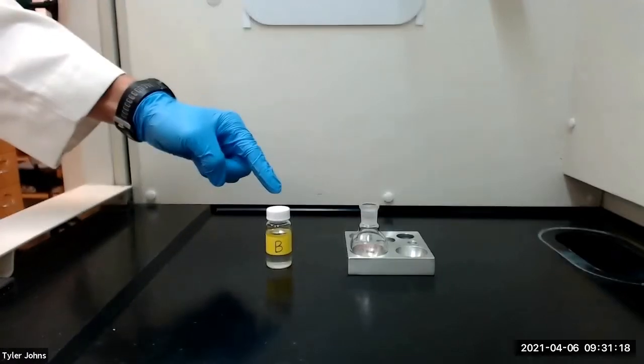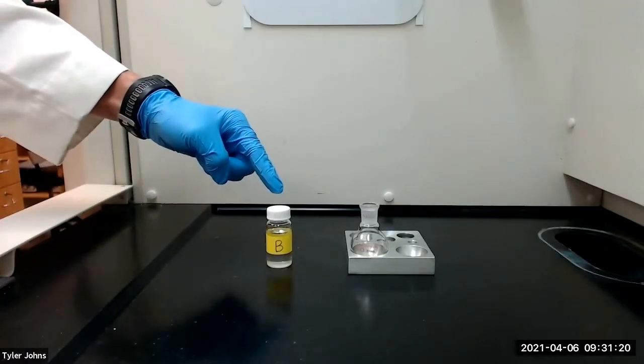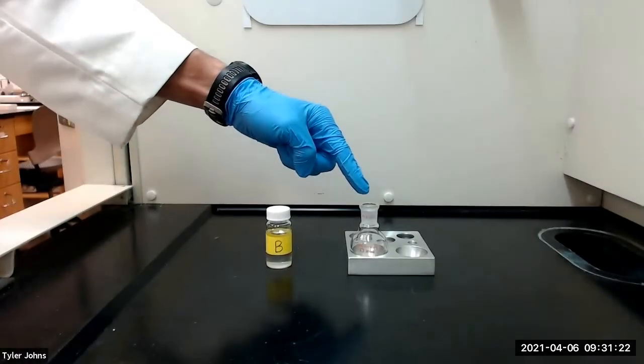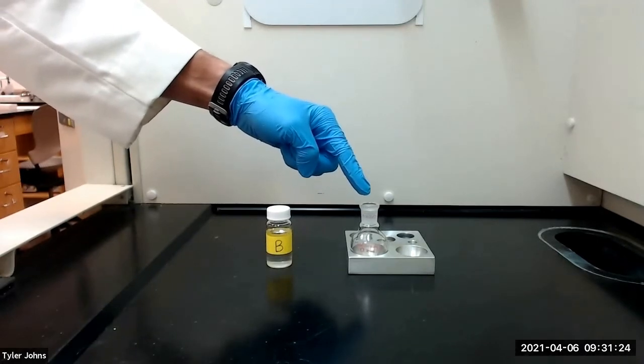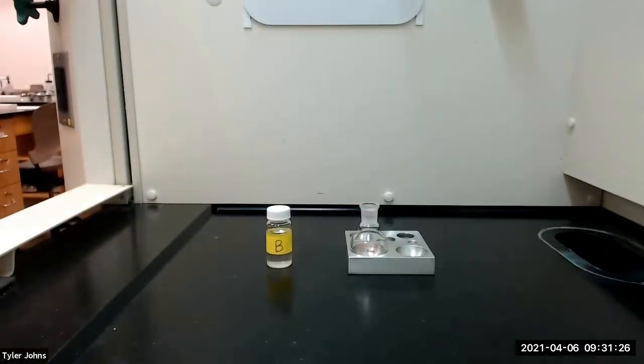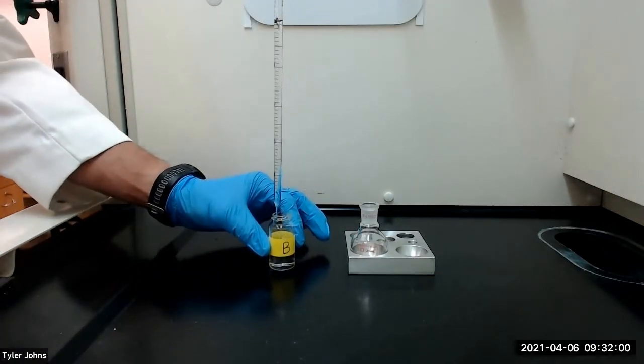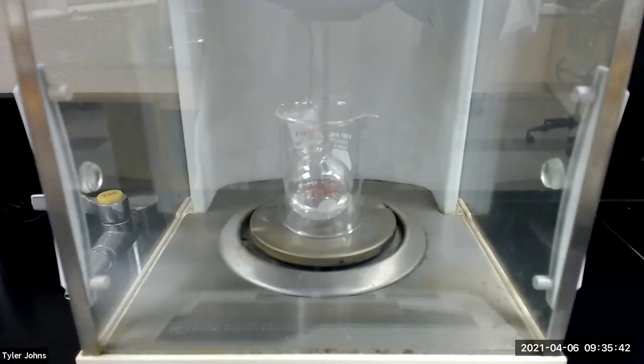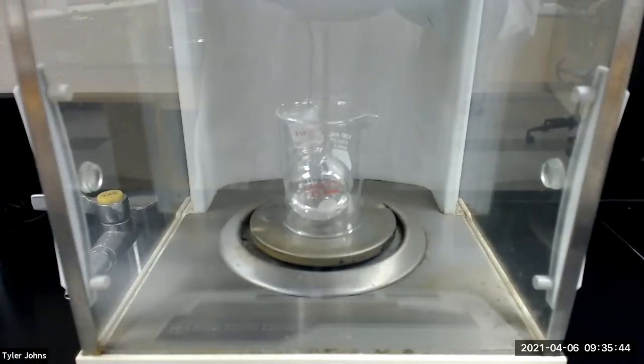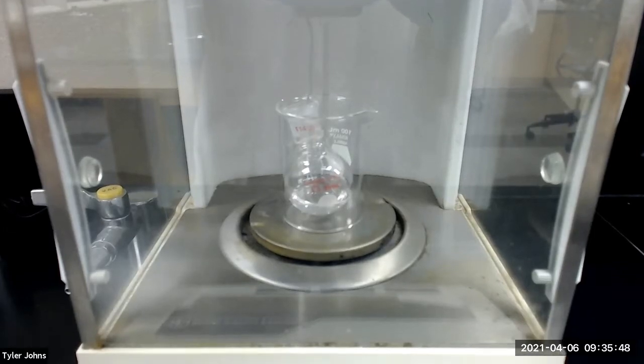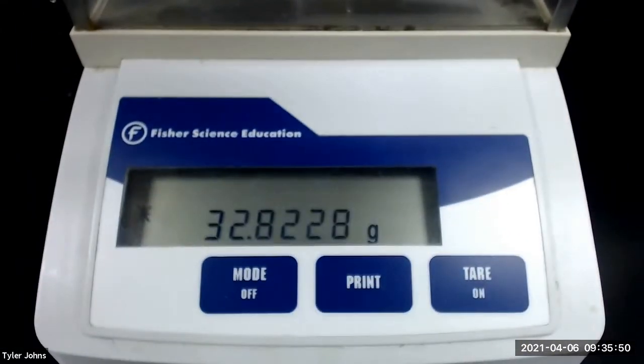We will next add 5 milliliters of unknown alcohol B to the pre-weighed 25-milliliter round bottom flask and then determine the mass of the flask plus the unknown alcohol. The mass of the pre-weighed 25-milliliter round bottom flask plus unknown alcohol B is 32.8228 grams.